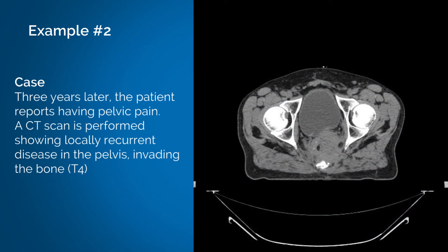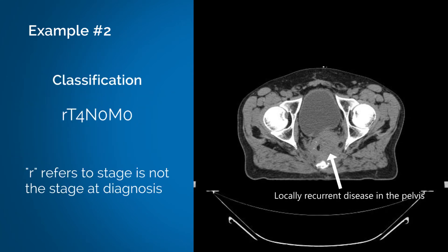Three years later, the patient reports having pelvic pain. A CT scan is performed showing locally recurrent disease in the pelvis, invading the bone — T4. To identify that this is not at diagnosis, the patient's new tumor classification would be rT4N0M0, where R indicates recurrent disease. While the stage at diagnosis is recorded in the chart and remains unchanged, any reinvestigation of the cancer which shows a progression of disease can be staged, but R should be used in front to show that this stage is not the stage at diagnosis.